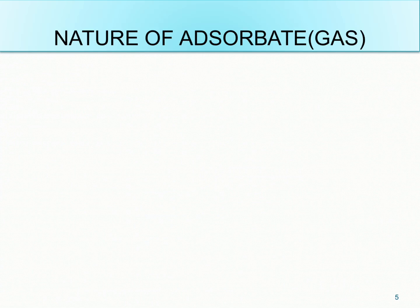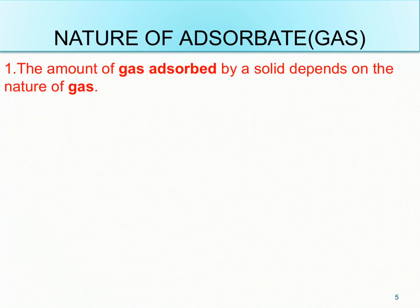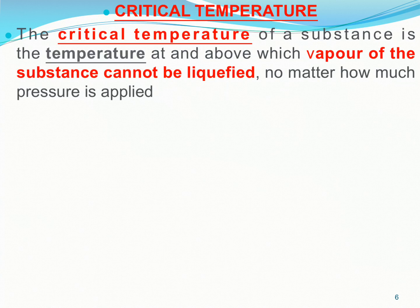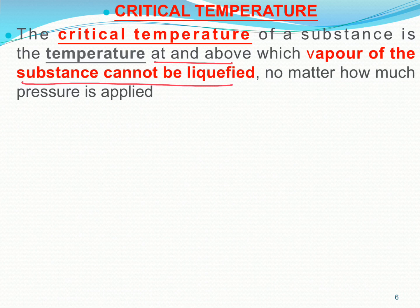Now let's discuss the nature of adsorbate — what kind of gas gets adsorbed on the adsorbent surface. A gas that is easily liquefiable — meaning it has a high critical temperature — will be adsorbed more easily. Let's first understand critical temperature. It is the temperature at and above which the vapor of a substance cannot be liquefied — meaning it cannot be converted to liquid form.